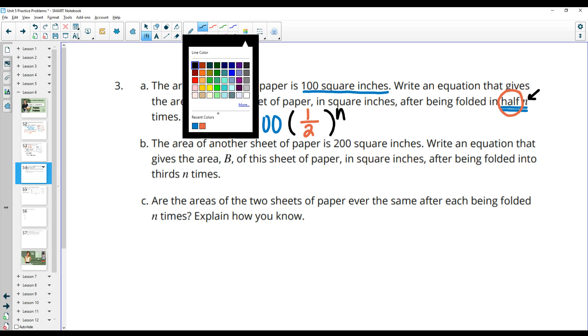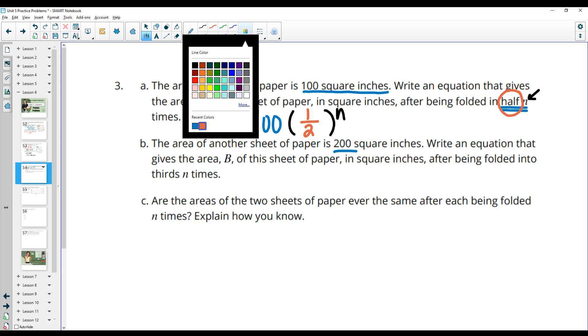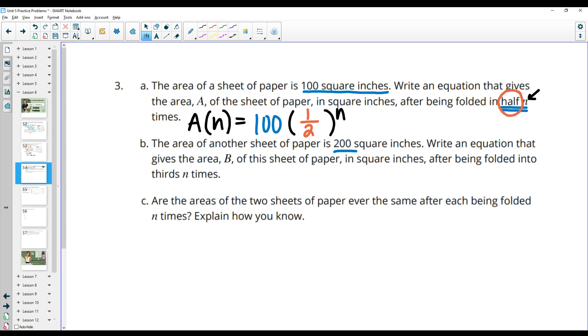Part B gives us now the paper is 200 square inches. And then this sheet of paper is being folded into thirds n times. So this time they want our function name to be B. So we'll do B. And again, folding n times. So B of n is going to be the initial value times the fraction of the paper that's left each time. So our paper started at 200 square centimeters this time. And now we have one third of the size of the paper each time.